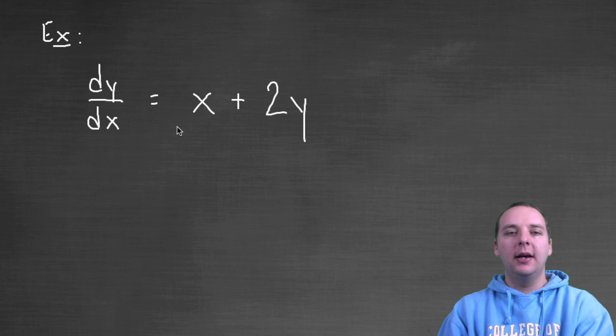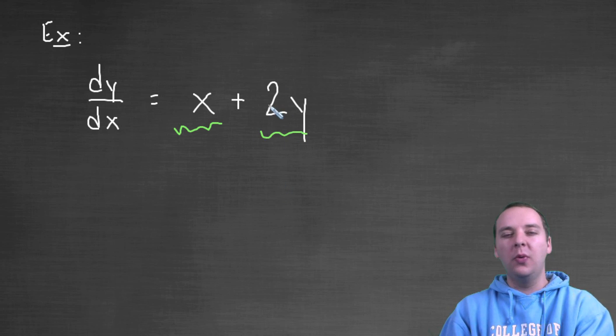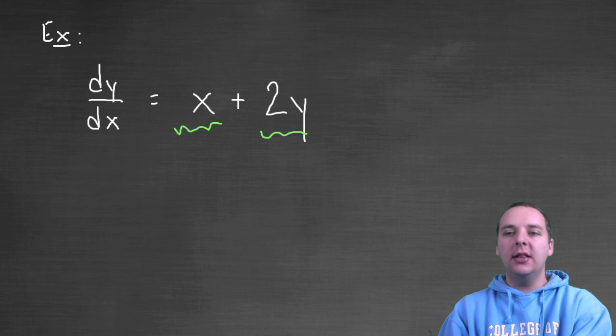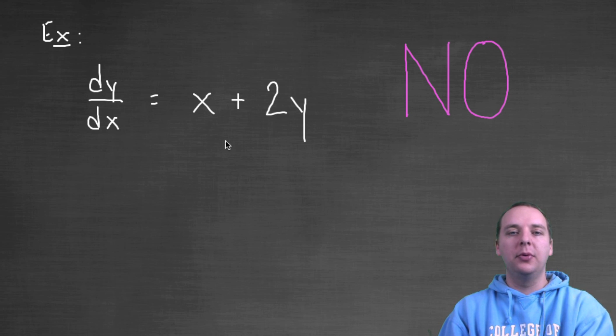All right, moving on. Last one: how about this guy, is he separable? He seems pretty simple, doesn't really seem like there's a whole lot to this guy. You kind of have a function of x and the function of y kind of already separated in a way, kind of sorta. Turns out this is actually not separable. This is a no.